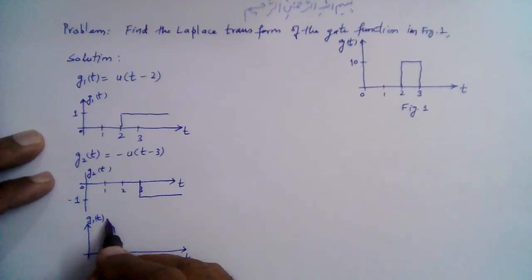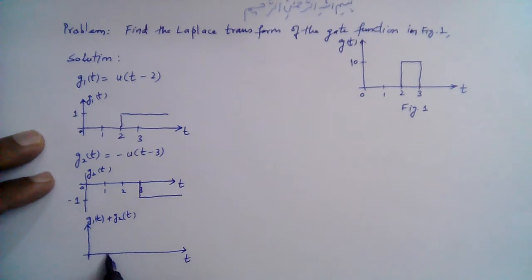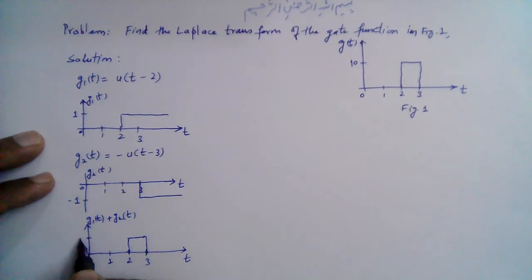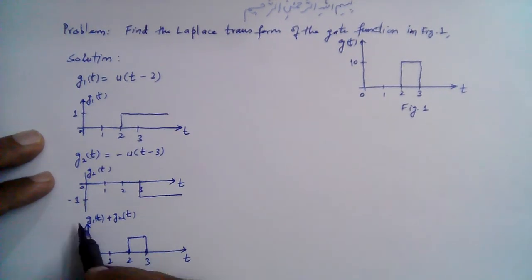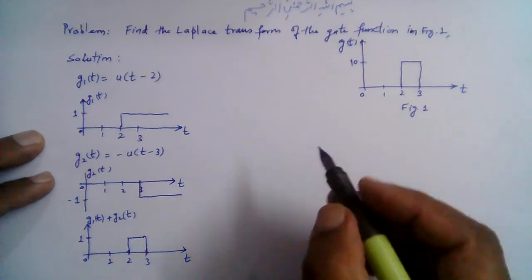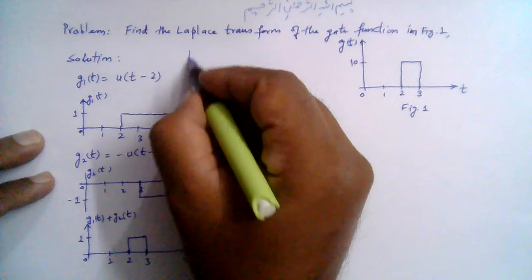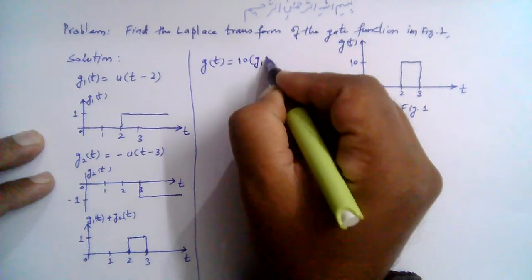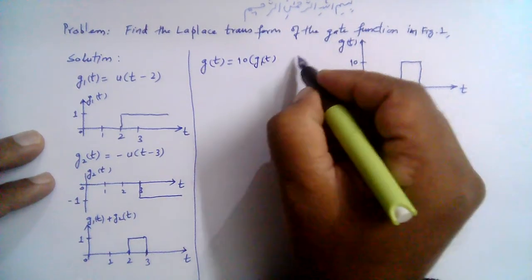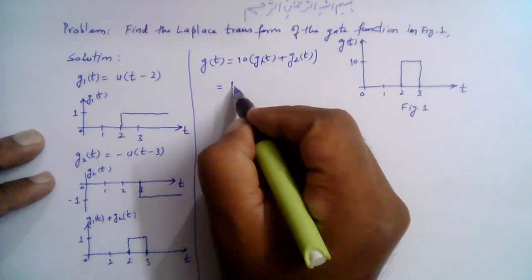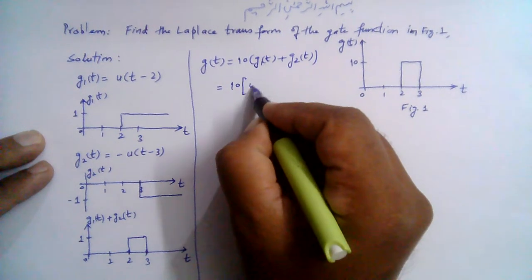Adding g1(t) plus g2(t): on the time axis at 0, 1, 2, and 3, g1 plus g2 gives us a unit pulse with amplitude 1 between t=2 and t=3. If we multiply it by 10, which is the amplitude of our original gate function, then we get the function g(t).